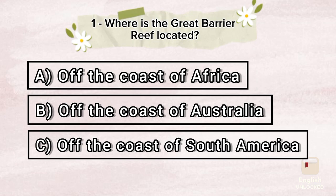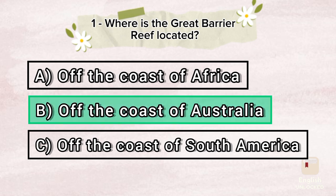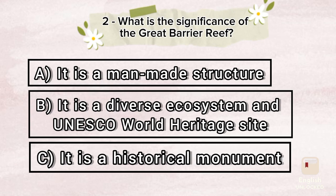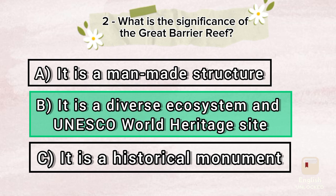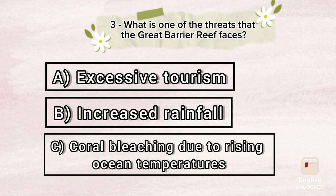Choose the correct answers. Where is the Great Barrier Reef located? A. Off the coast of Africa. B. Off the coast of Australia. C. Off the coast of South America. What is the significance of the Great Barrier Reef? A. It is a man-made structure. B. It is a diverse ecosystem and UNESCO World Heritage Site. C. It is a historical monument. What is one of the threats that the Great Barrier Reef faces? A. Excessive tourism. B. Increased rainfall. C. Coral bleaching due to rising ocean temperatures.